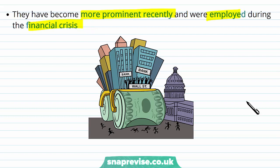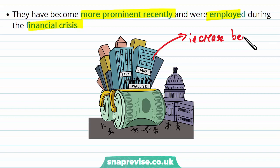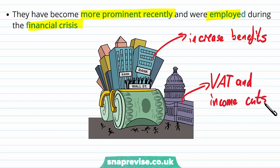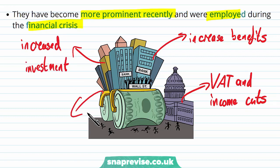Some of the fiscal policies enacted during the financial crisis include increased spending on benefits to help people during unemployment, and VAT and income tax cuts — for example, the personal allowance threshold has risen over the years, and VAT has been cut from 20% at times. There has also been increased government investment into the economy, and the government spent a lot of money on bailouts to failing banks. That was considered necessary because if those financially important institutions had failed, it would have crippled the financial industry nationwide and had a big impact on the broader economy.